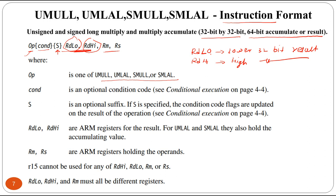For UMLAL and its signed equivalent, RdLo and RdHi hold the accumulating value. Rm and Rs hold the operands. R15 cannot be used, and RdLo, RdHi, and Rm must all be different registers. There are no specific fixed registers named RdLo or RdHi - these can be any registers such as R0 and R1, as long as they are different from each other.